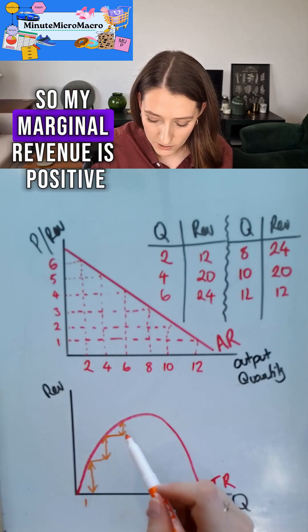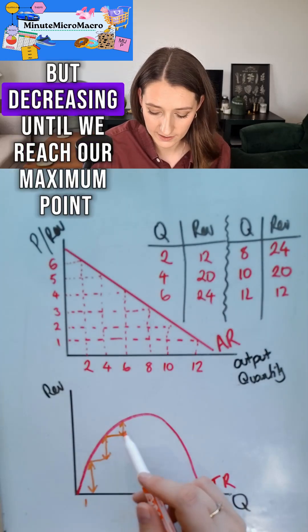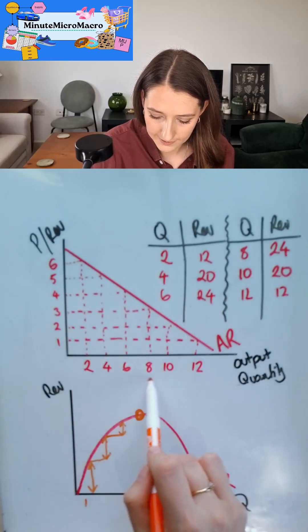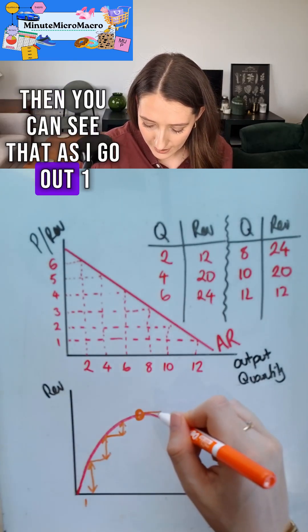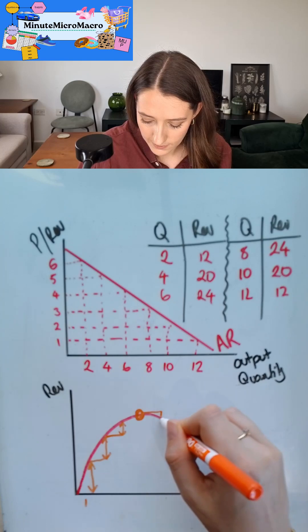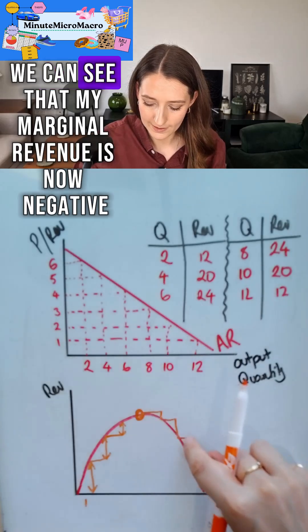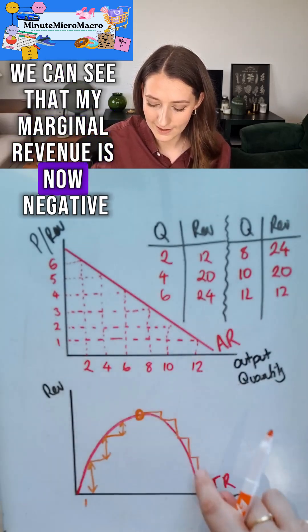So my marginal revenue is positive but decreasing until we reach our maximum point that's around six and eight. Then you can see that as I go out one I go down. Out one down, out one down, out one and down. We can see that my marginal revenue is now negative.